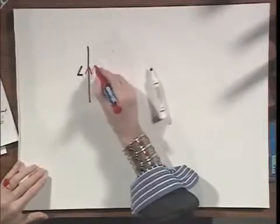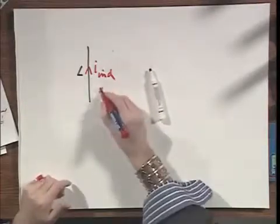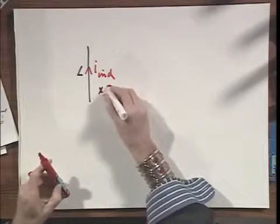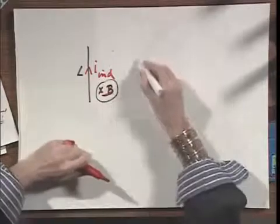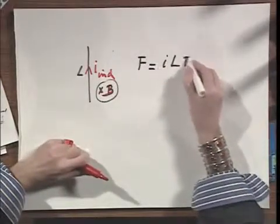It has a current flowing through it, which is I induced, which we just calculated. It has a magnetic field B. I should really make it black. B in the paper, which is this external field. And so the force on the wire equals I times L times B.